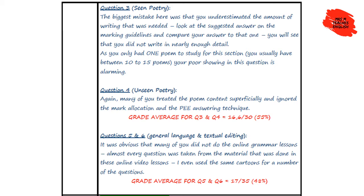Please look at the remaining two questions on paper 1 — questions 5 and 6, the general language and textual editing questions. Have a look at that appalling grade average: 48 percent. Almost everything I asked in these questions I covered in the online grammar lessons during terms 2 and 3. I even used the same cartoons and some of the same questions from those video lessons. So what this tells me is that the majority of you did not do the lessons, and if you did, you certainly didn't do them properly. A 48 percent grade average for questions 5 and 6 has me just about tearing my hair out. Grade 10s, you have to do better than this.